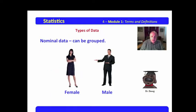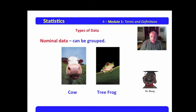Now, nominal data can be grouped. Here we have two groups: female, male, just simply broken out. You're either a female or a male. We have the group cow or tree frog. We might want to do a comparative study of the attitudes of cows and tree frogs. So we have nominal data when we compare them.